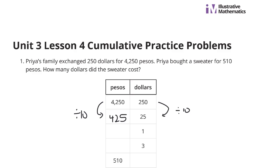Next, how do we get from 25 to 1? Well, this time we're dividing by 25. 425 divided by 25 is 17.